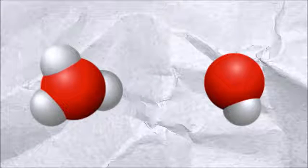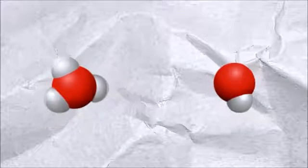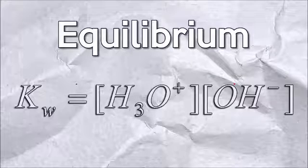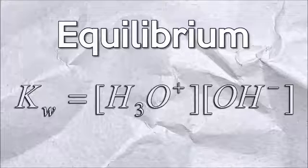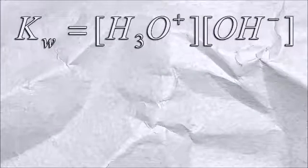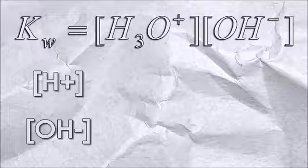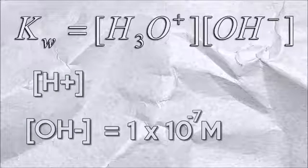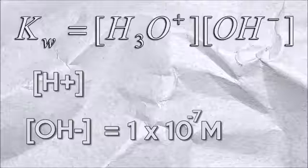Now since water is a neutral substance it can produce a really tiny amount of these ions. This is the reason for needing an equilibrium. Now ignore the math, just focus on me and you'll be fine. This equation shows us that the concentrations of hydrogen and hydroxyl ions in a balanced state are 10 to the negative 7 molar.